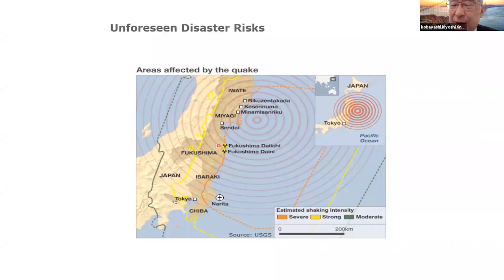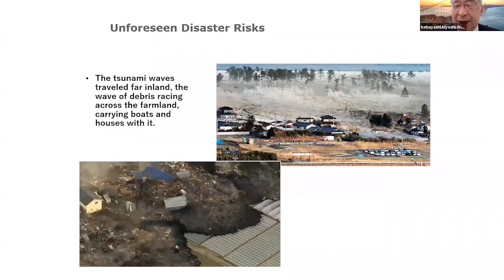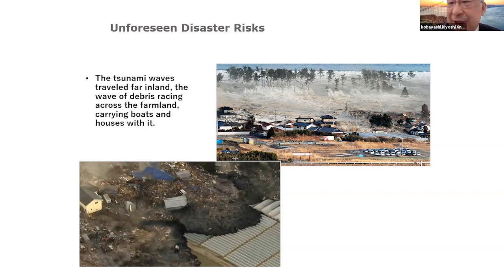It was a really big earthquake, and this slide shows how the energy of the earthquake spread out through time. The shaded regions are affected areas. These images were obtained from the media. This was an unfolding disaster risk — nobody expected such big tsunami attacks.